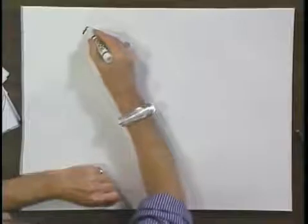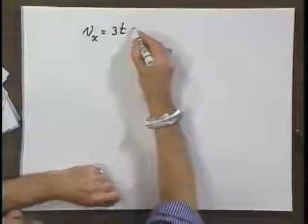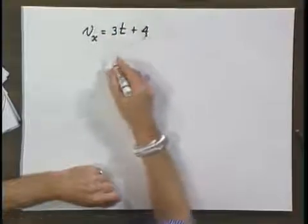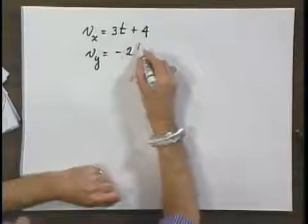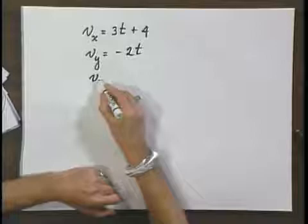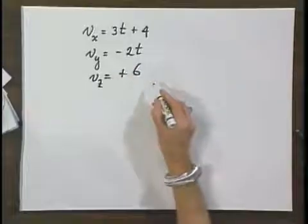And I would like to revisit something that I did earlier, whereby we had v of x equals 3t plus 4, v of y equals minus 2t, and v of z was plus 6.